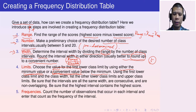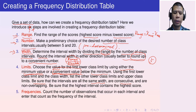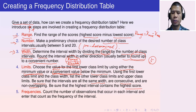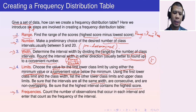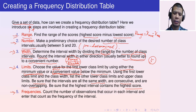Be sure that all intervals are of the same width, consecutive, and non-overlapping. Also be sure that the highest interval contains the highest score. Finally, step five: find the corresponding frequencies by counting the number of observations that occur in each interval and entering the count as the frequency for that interval.